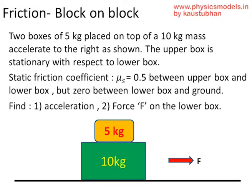In this video I'll explain a tricky problem involving Newton's laws of motion, free body diagrams and friction. We have the problem explained on the screen: a box is sitting on another box and there is a force F pulling the lower box towards the right, dragging the upper box along with it. There is no relative motion between the upper and lower boxes, so there is static friction, and zero friction between the lower box and the ground. We need to find the acceleration of the system and the force F on the lower box.